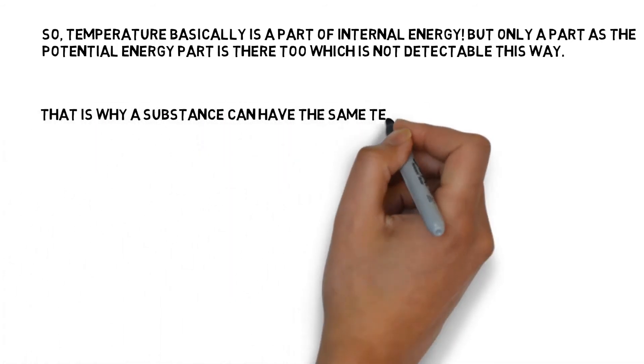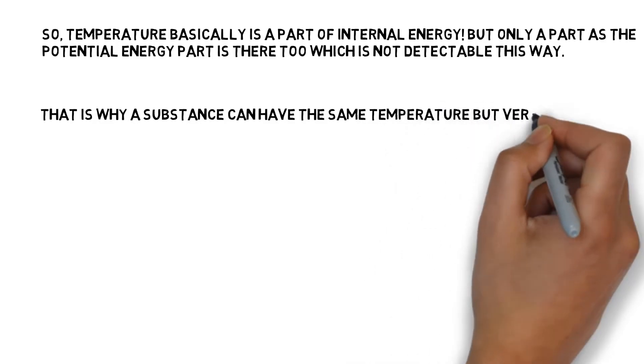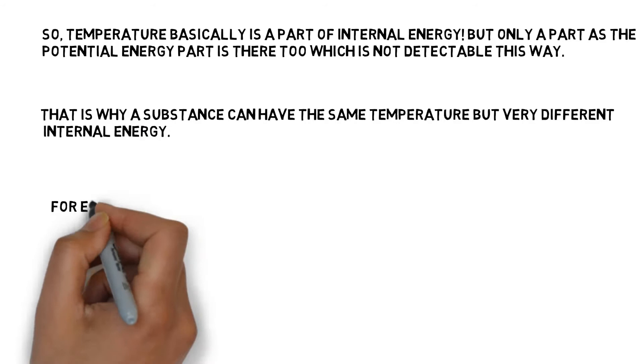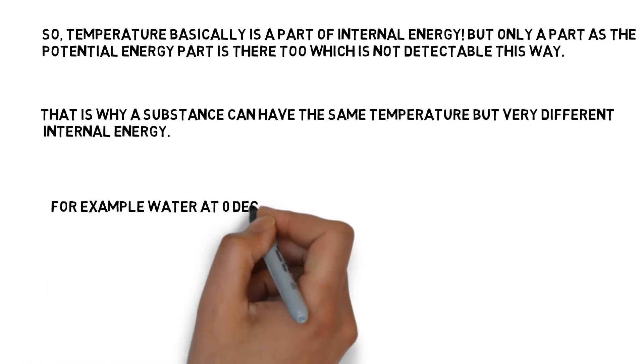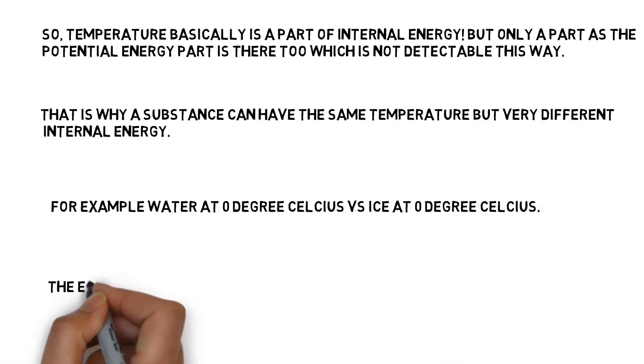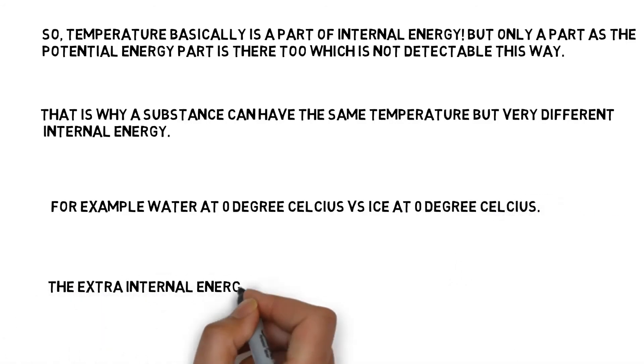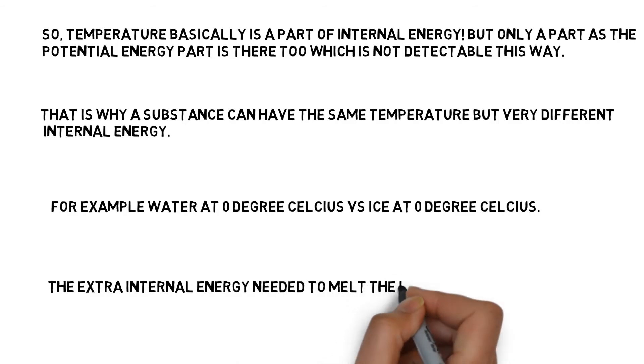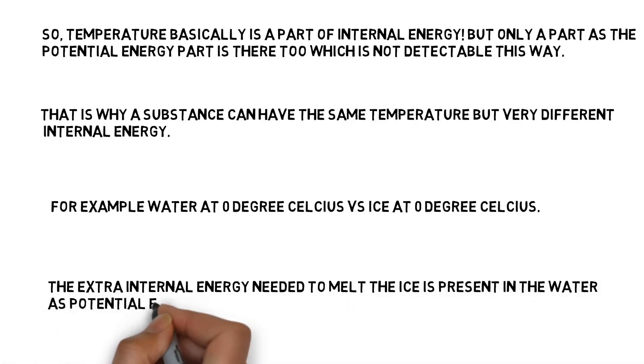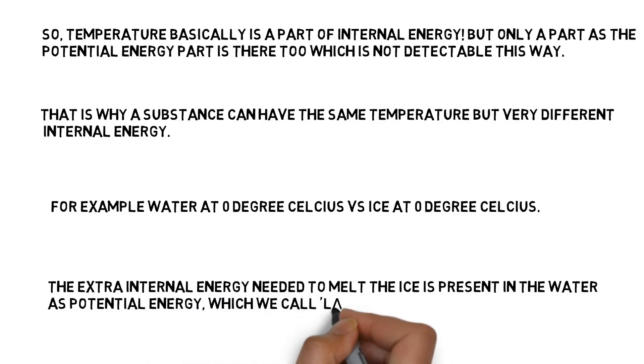That is why a substance can have the same temperature but very different internal energy. As an example, let us take water at 0 degree Celsius versus ice at 0 degree Celsius. They both are not having the same internal energy. Why? Because the extra internal energy needed to melt the ice is present in the water as potential energy, which we call latent energy.